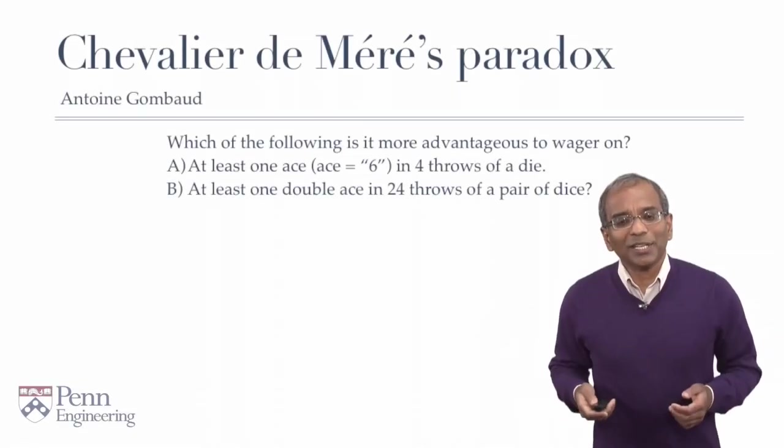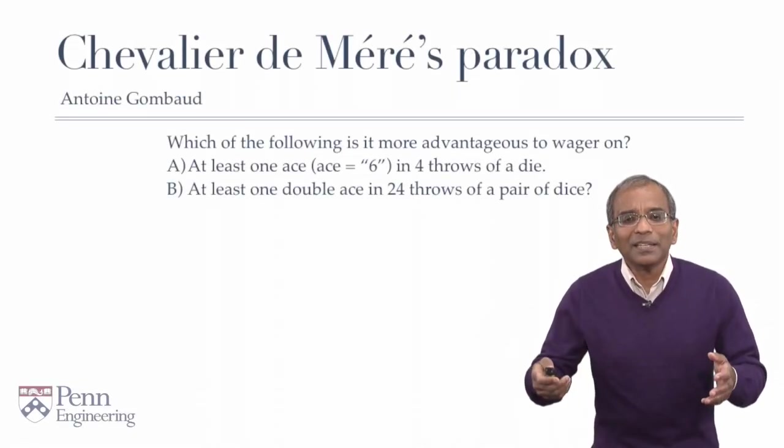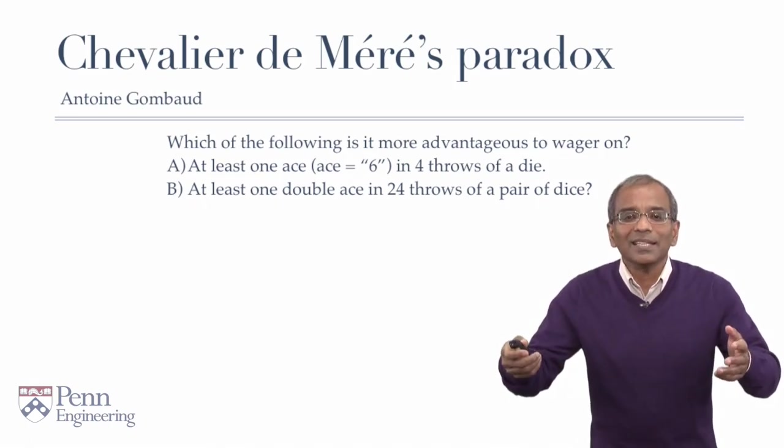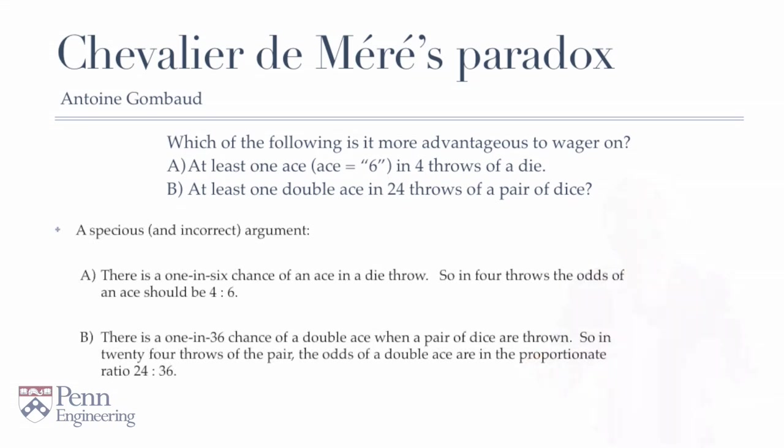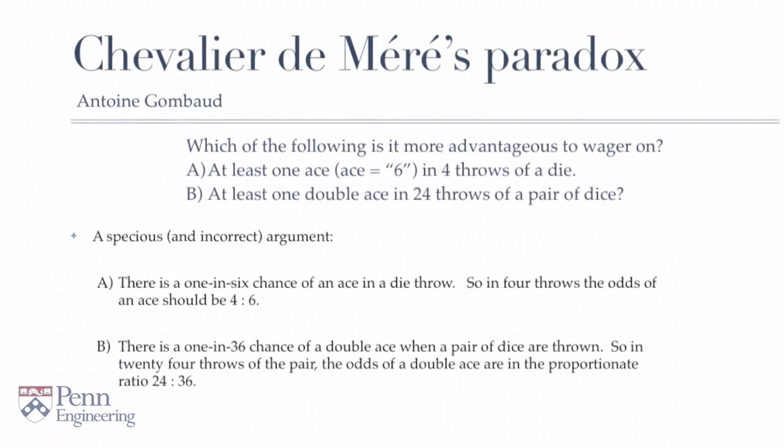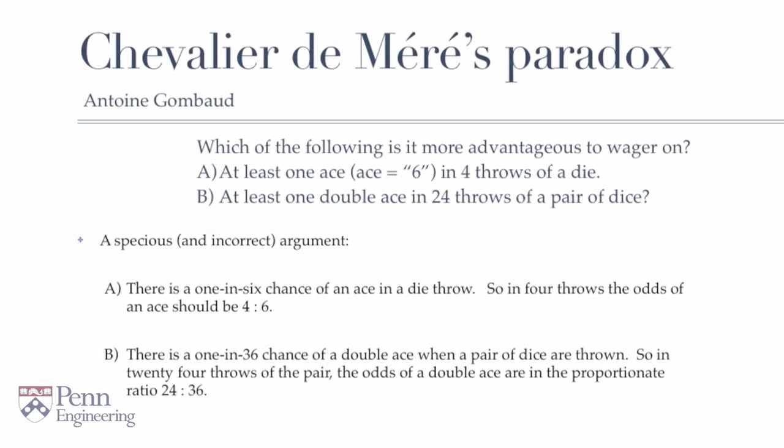All right, now we've had a chance to think about it. In fact, let me begin by throwing out an analysis which is specious and actually incorrect. Here's how an argument might go, a naive argument. When one throws a die, every face is equally likely, and so in particular a six or an ace has got a one in six chance of appearing. Since one is throwing the die four times, there is a four in six chance of getting an ace. Now, that sounds reasonable, but let's carry on.